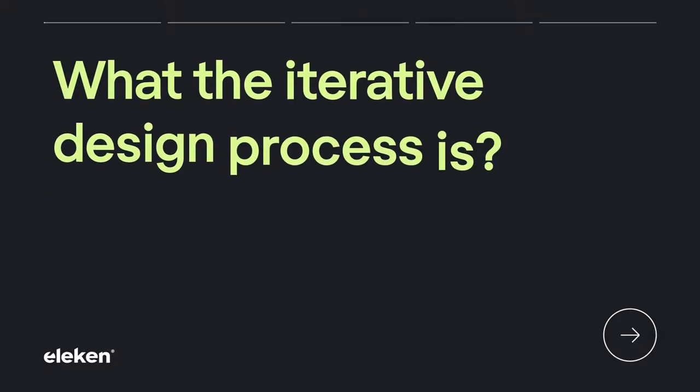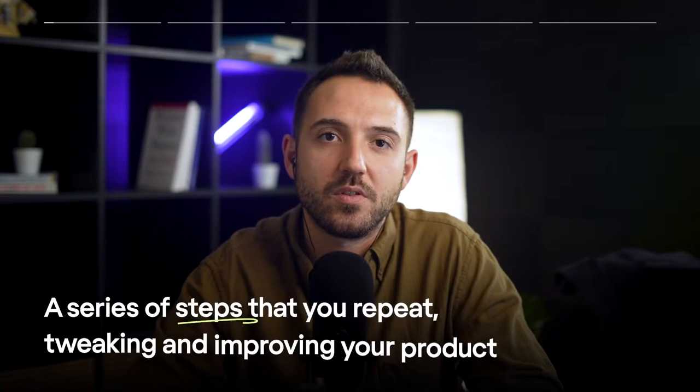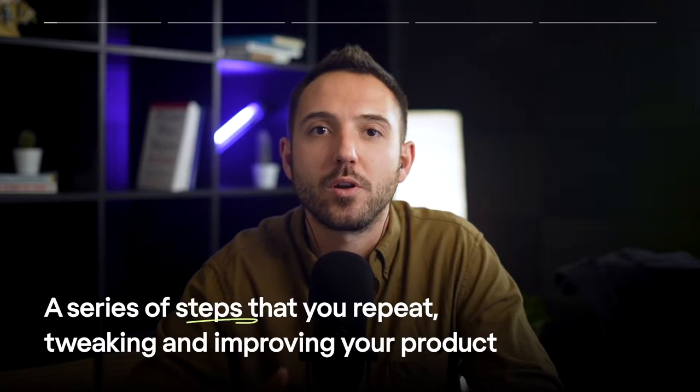First of all, let's define what the iterative design process is. It is a series of steps that you repeat, tweaking and improving a product with each new cycle. The goal is to get closer to optimal solutions step-by-step through iterations. This is aligned with design thinking as well as Agile and Scrum methodologies. I've talked about design thinking and Agile in other videos — you can find the links in the top right corner or in the description.